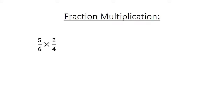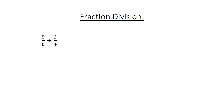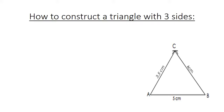Fraction multiplication: five over six times two over four equals ten over twenty-four, which simplifies to five over twelve. Fraction division: five over six divided by two over four equals five over six. Multiply by four over two equals twenty over twelve, which equals one and two over three.